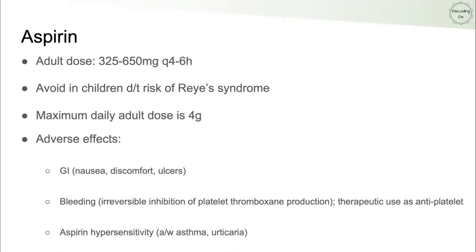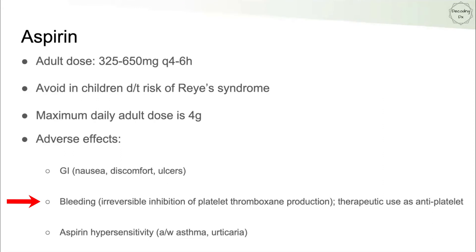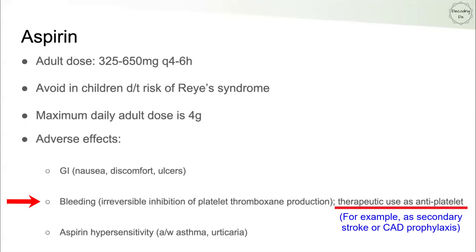Aspirin is also an option for non-opioid analgesia. The maximum daily adult dose is four grams, similar to acetaminophen. Adverse effects include GI issues such as nausea, discomfort, and ulcers, as well as bleeding, because aspirin causes irreversible inhibition of platelet thromboxane production. Aspirin's antiplatelet effect tends to be its more common use today, though it has both analgesic and antiplatelet applications.